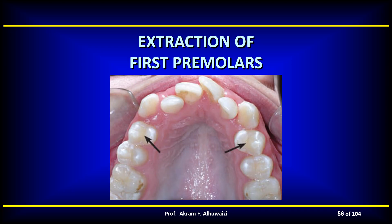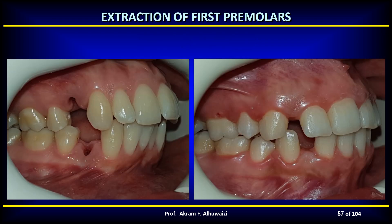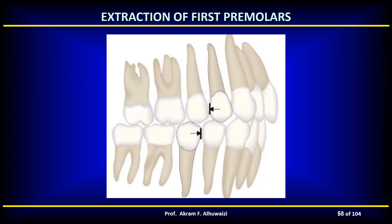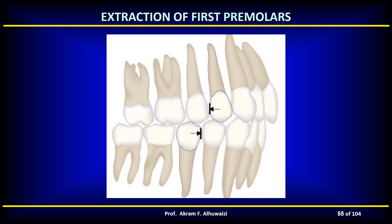Extraction of first premolars is the tooth most commonly extracted as part of orthodontic therapy, especially for the relief of crowding. It is positioned near the center of each quadrant of the arch and is therefore near the site of crowding; the space gained by their extraction can be utilized for correction of both anterior and posterior crowding. Also, its extraction is least likely to upset molar occlusion and is the best alternative to maintain the vertical dimension. The contact between the canine and the second premolar is generally satisfactory, and its extraction leaves a posterior segment offering adequate anchorage for retraction of the six anterior teeth — the four, five, and six.